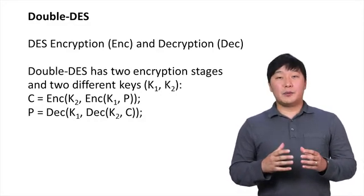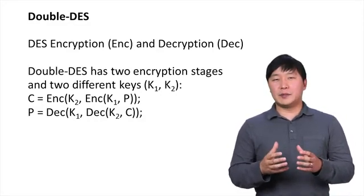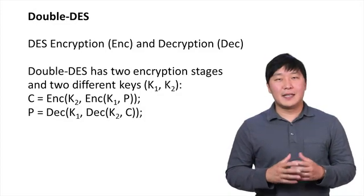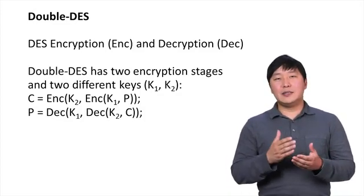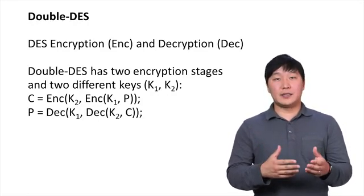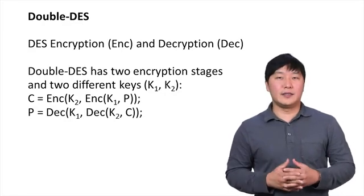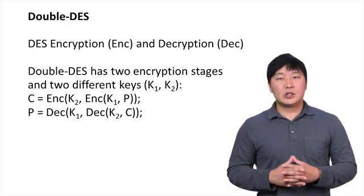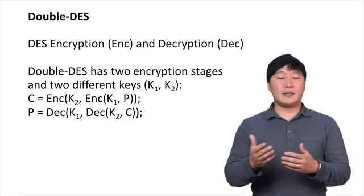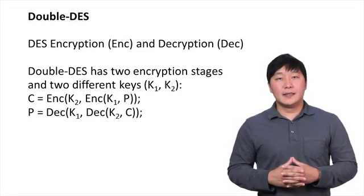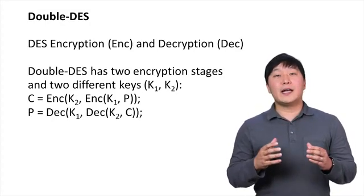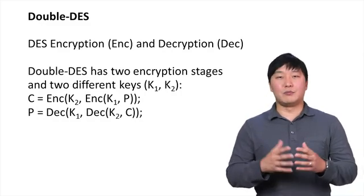For the multiple encryption approach, the simplest form has two encryption stages and two keys, and is called Double DES. In Double DES, two DES encryption ciphers are sequentially applied, where key k1 is used first and then key k2 is used for the following DES cipher. To reverse the encryption, Double DES decryption uses key k2 first and then key k1. This can also be expressed mathematically, where those inside the parentheses are computed first.